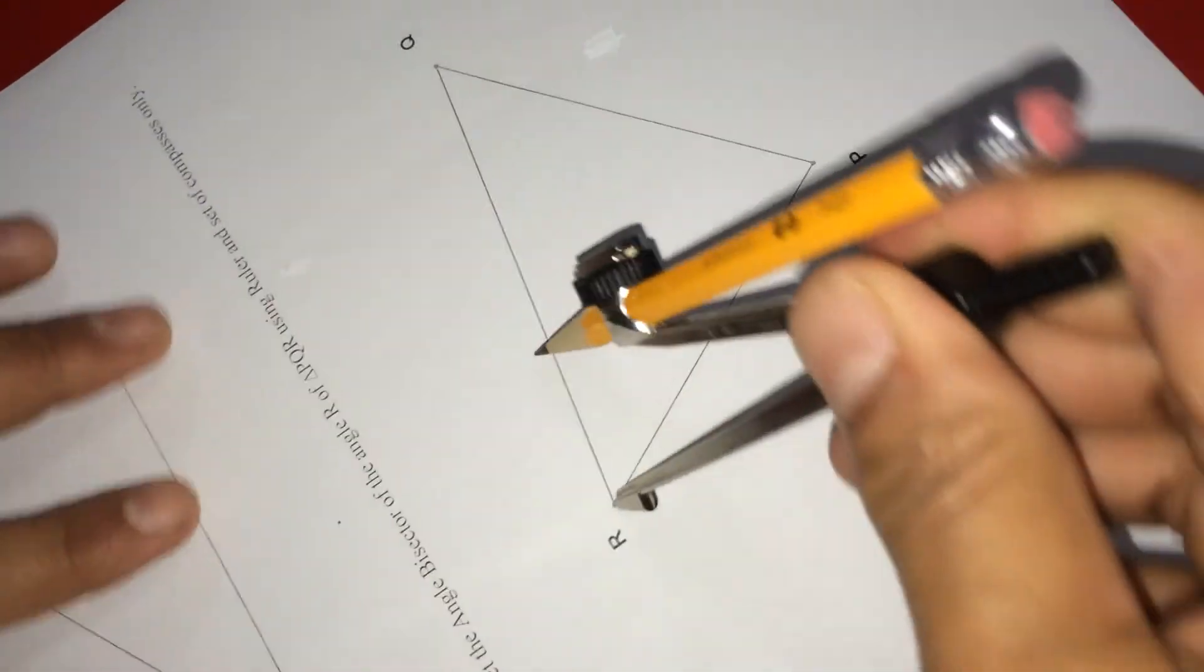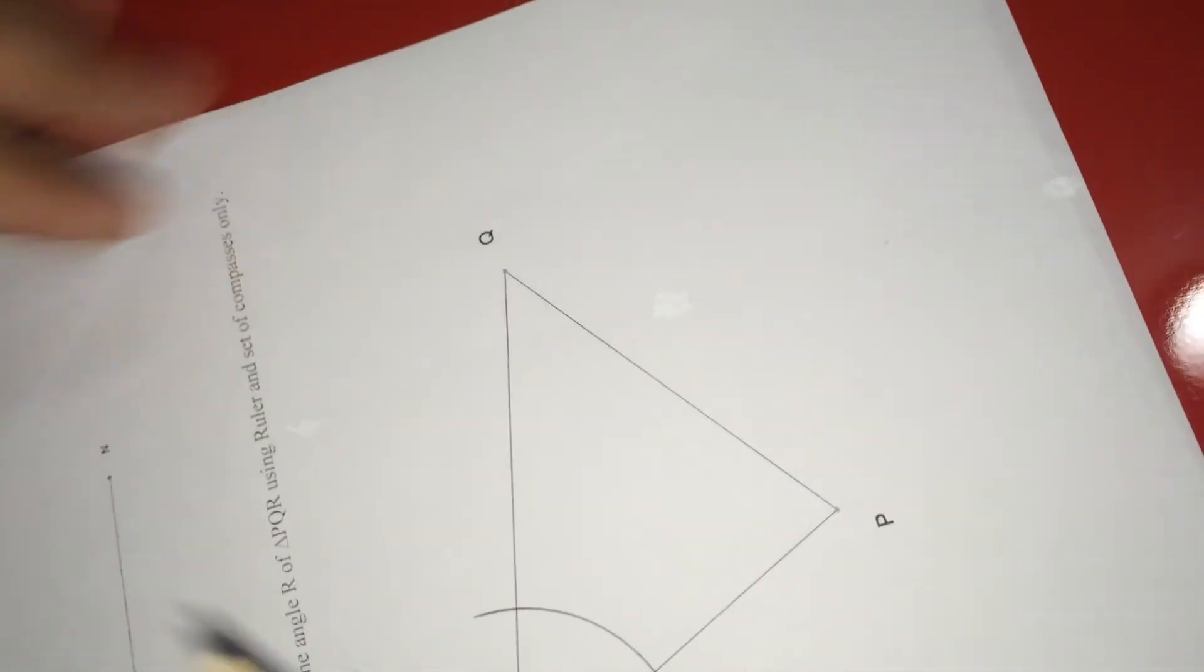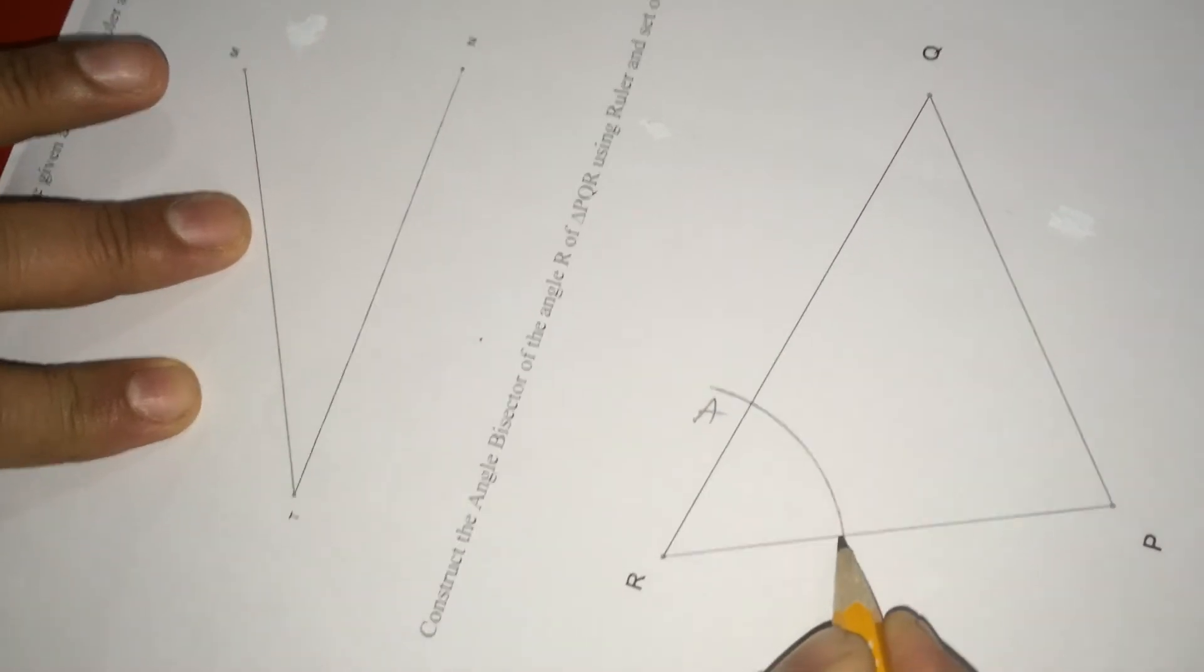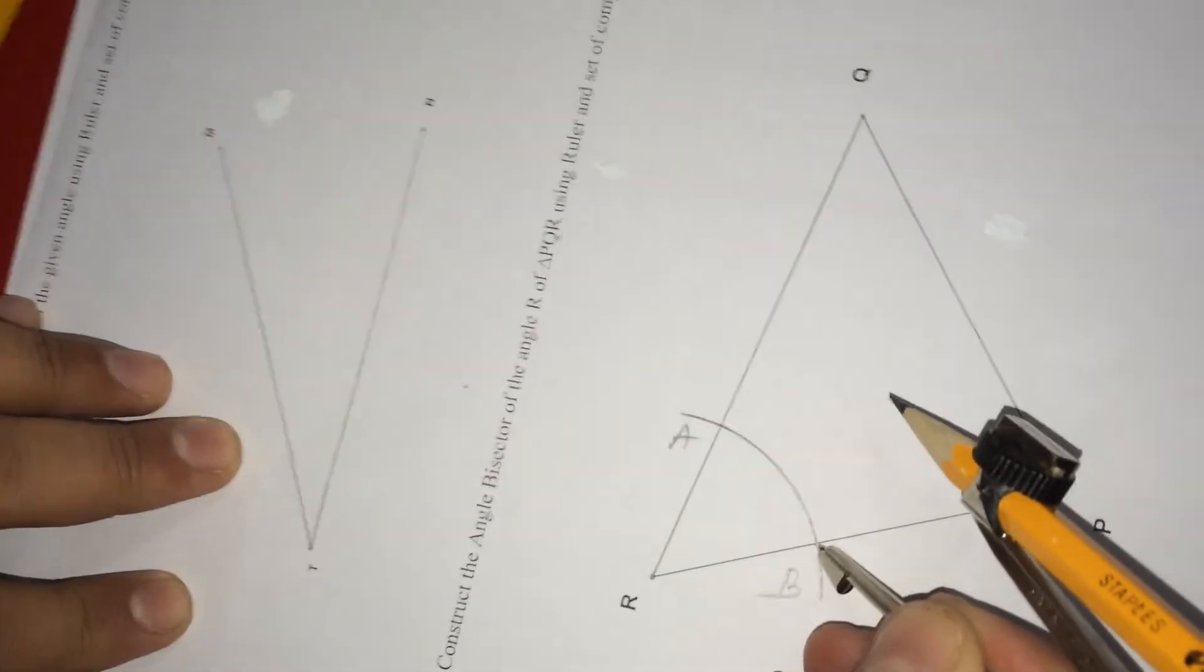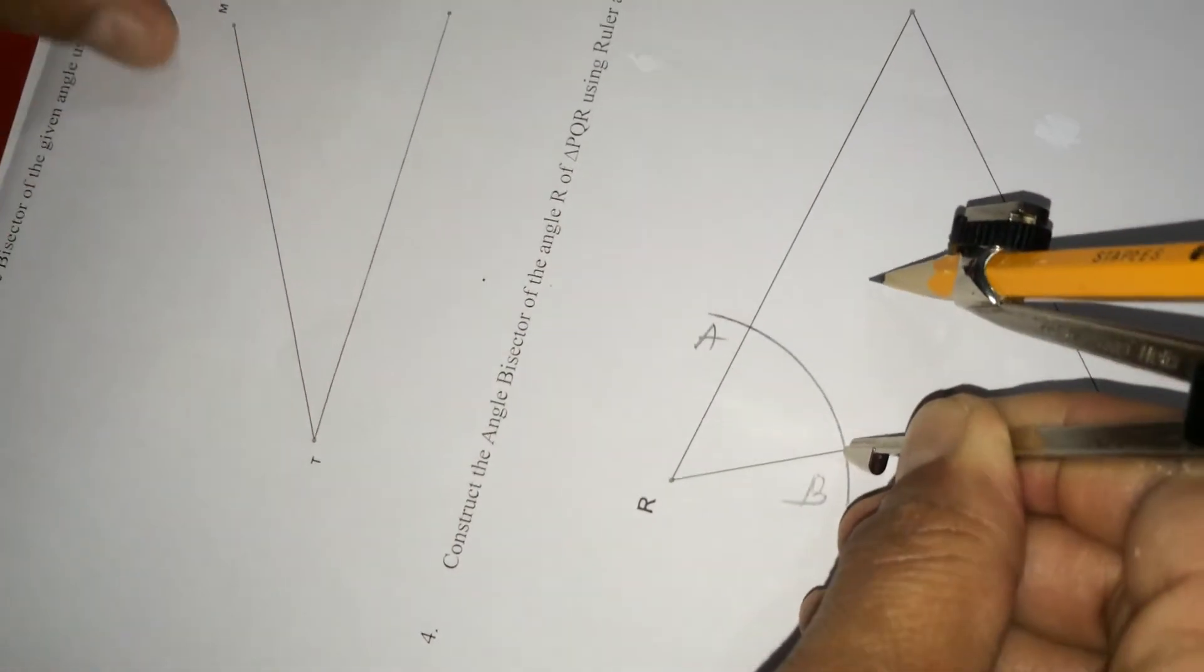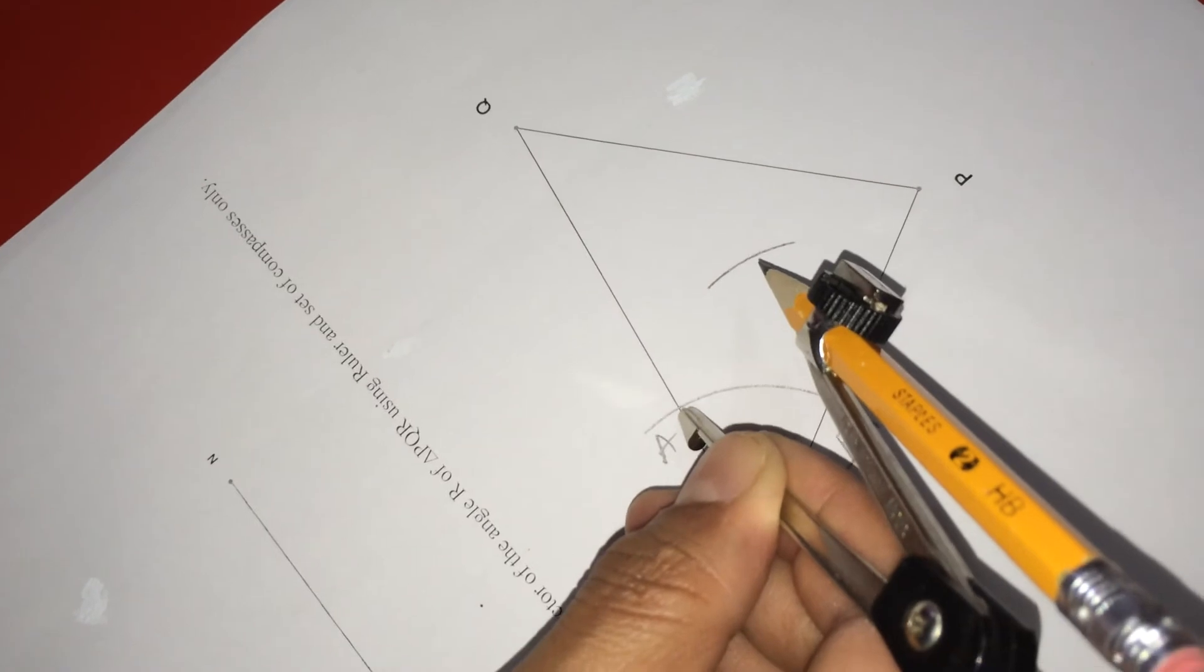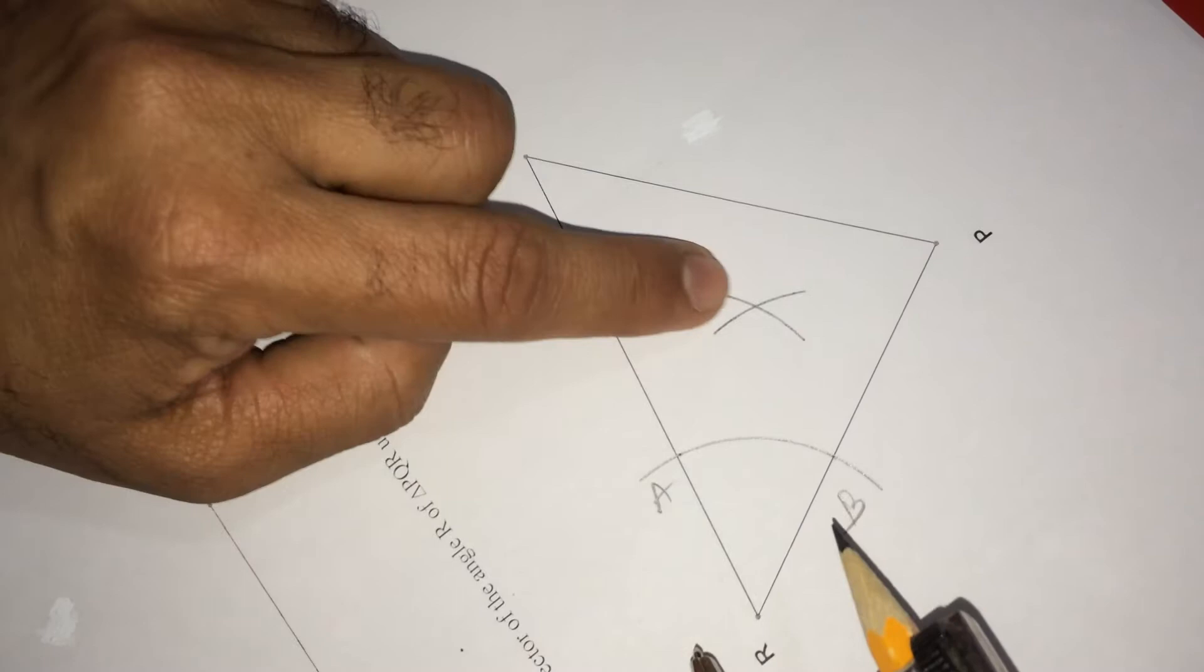So, approximately this much radius, there is no restriction, draw an arc like this. It is cutting at two points, you name them as A and this point as B. Now, I am taking this B as center here, I draw the same radius, I have not changed anything, I am drawing one arc like this. And I am lifting it up and putting this time A as center, I am drawing one more arc to cut the previous arc here.